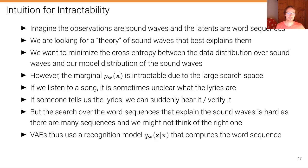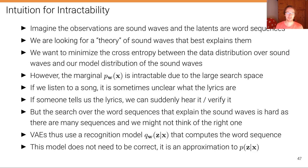VAEs use a recognition model q parameterized by w of C given X that computes the word sequence given an observation, giving us a better idea of where in the latent space to look for a particular data point. This model does not need to be correct — it can be a crude approximation to P of C given X. As long as it gives a better intuition than a very broad distribution, it's already useful, and training this model jointly leads to a VAE that converges much more quickly.